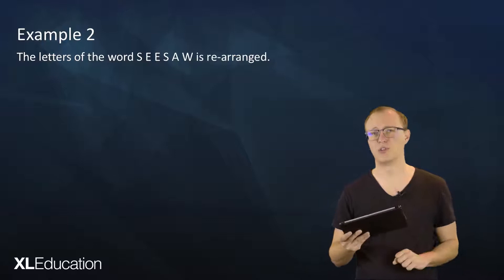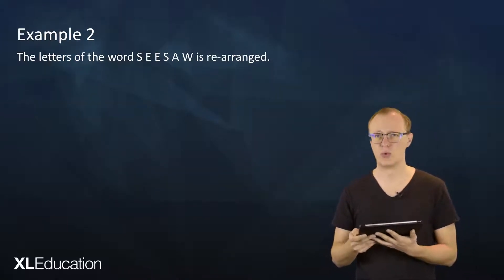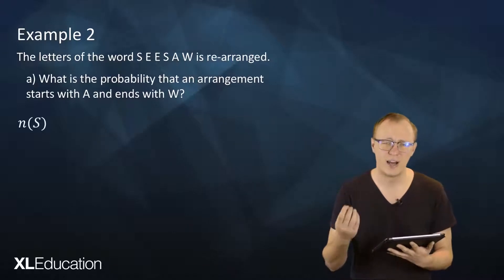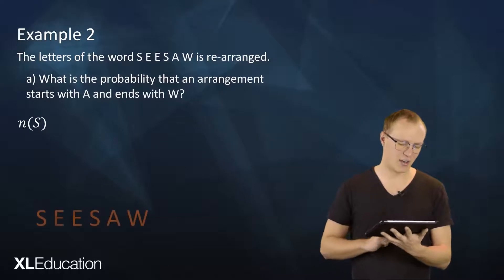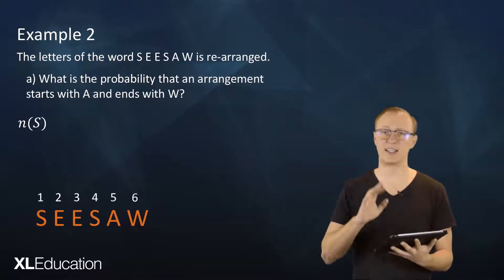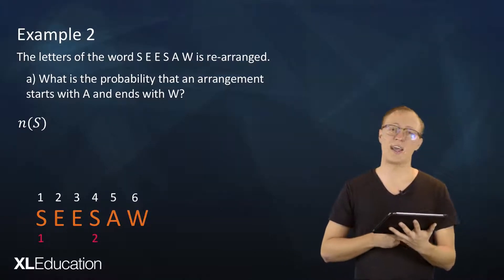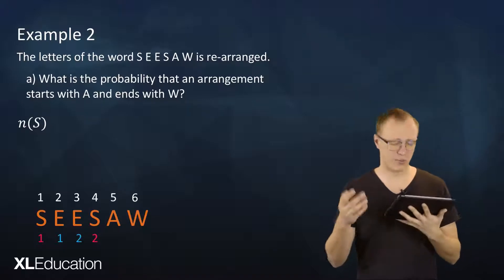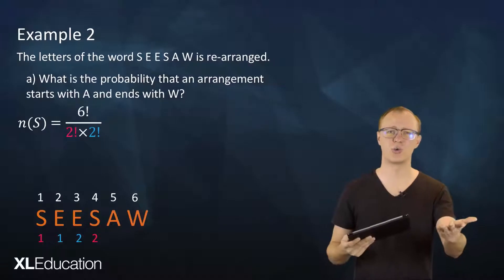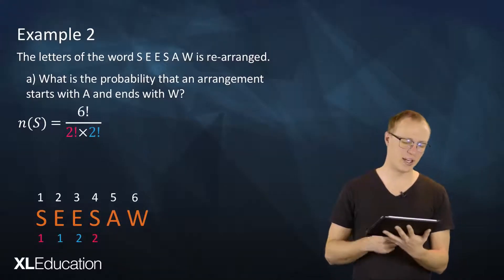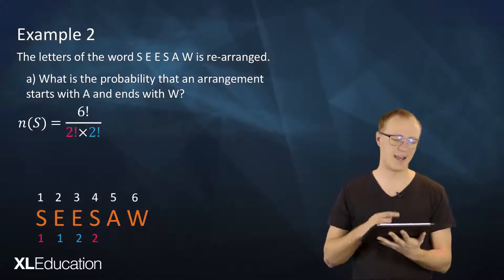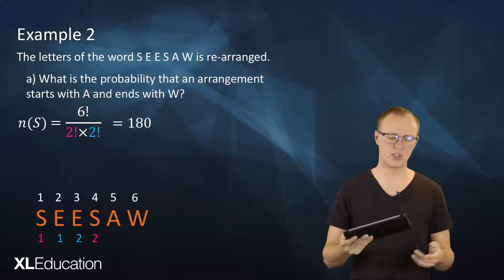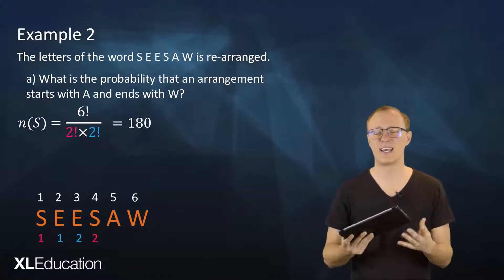Now we move on to example two. The letters of the word 'seesaw' are rearranged. The question is: what is the probability that an arrangement starts with A and ends with W? First we find the sample space. 'Seesaw' has six letters, but S is repeated twice and E is repeated twice. Applying the counting principle for repetitions: 6! divided by 2! (for the two S's) times 2! (for the two E's), which gives 180 unique arrangements.